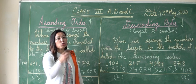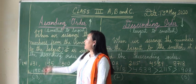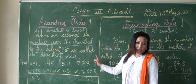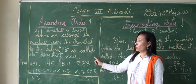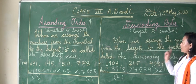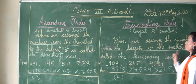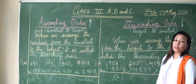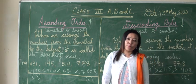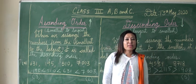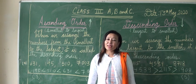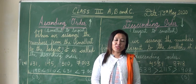Points to remember, children. Two points: first, when we arrange the numbers from the smallest to the largest, it is the ascending order. Second, when we arrange the numbers from the largest to the smallest, it is the descending order. I hope you are doing your assignments. Please practice maths every day and learn your tables also. Thank you.